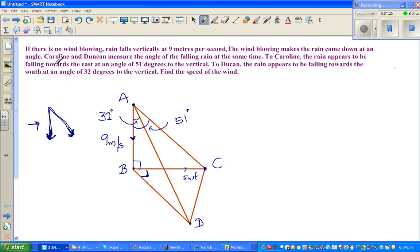Caroline and Duncan measure the angle of the falling rain at the same time. To Caroline, the rain appears to be falling toward the east at an angle of 51 degrees to the vertical. This is Caroline standing here, and the rain is now making an angle of 51 degrees to the vertical. So let's find BC.